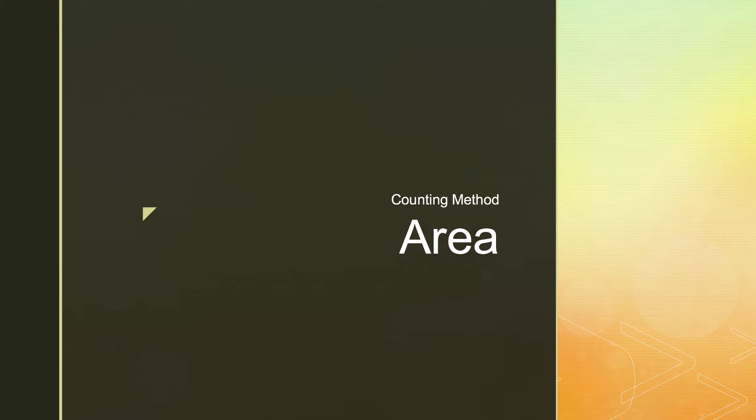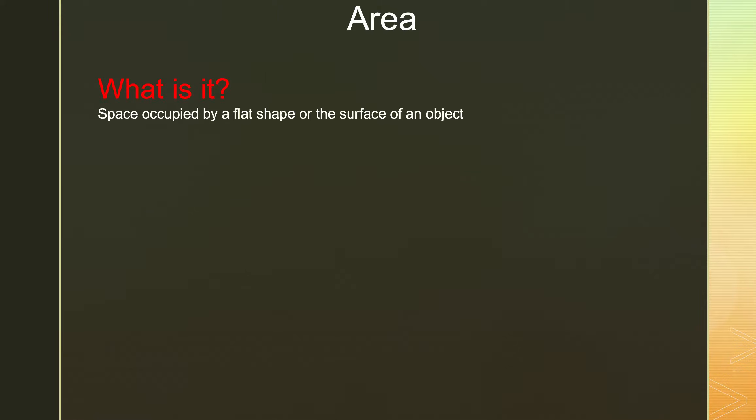Area counting method: What is it? Space occupied by a flat shape or the surface of an object. Why? Helps with the layout of a room if you want to change it up. Interesting fact: lions are the second biggest cat species behind... do you know? Once you guess... it is tigers! So let's get started.